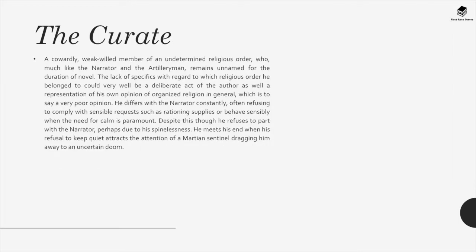The Curate: A cowardly, weak-willed member of an undetermined religious order who, much like the narrator and the Artillery Man, remains unnamed for the duration of the novel. The lack of specifics regarding which religious order he belonged to could be a deliberate act of the author representing his poor opinion of organized religion in general. He differs with the narrator constantly, often refusing to comply with sensible requests such as rationing supplies or behaving calmly when the need for calm is paramount. Despite this, he refuses to part with the narrator, perhaps due to his spinelessness. He meets his end when his refusal to keep quiet attracts the attention of a Martian sentinel, dragging him away to an uncertain doom.